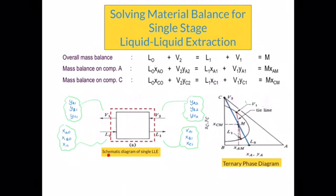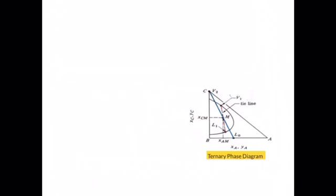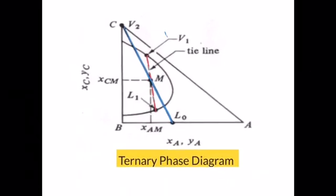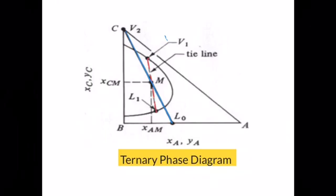After labeling your schematic diagram and coming up with the material balance equations, you can also refer to the ternary phase diagram. It should be labeled based on what you have in your schematic diagram, using the same symbols. So in the ternary phase diagram, you will have L0, L1, V1, and V2 — the same symbols used before. Now let's look at the bigger picture of the ternary phase diagram for single-stage liquid-liquid extraction.